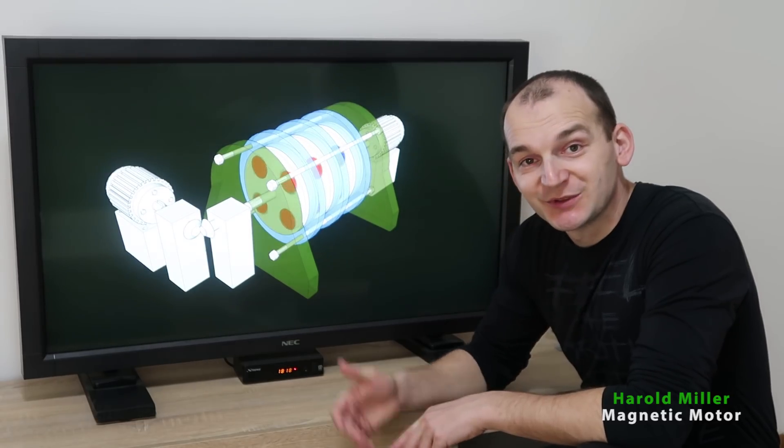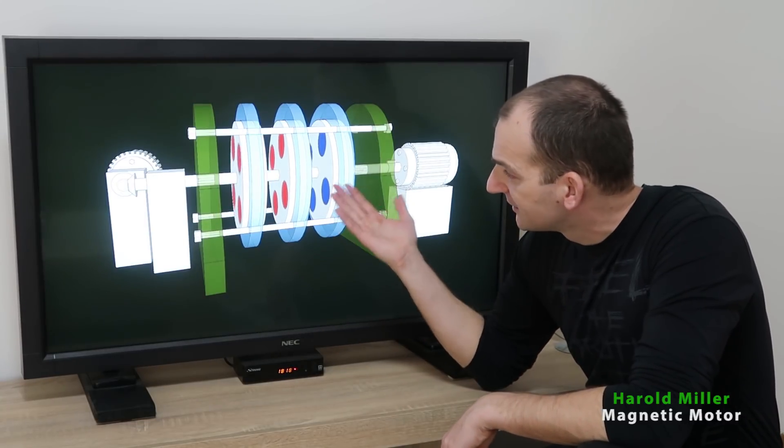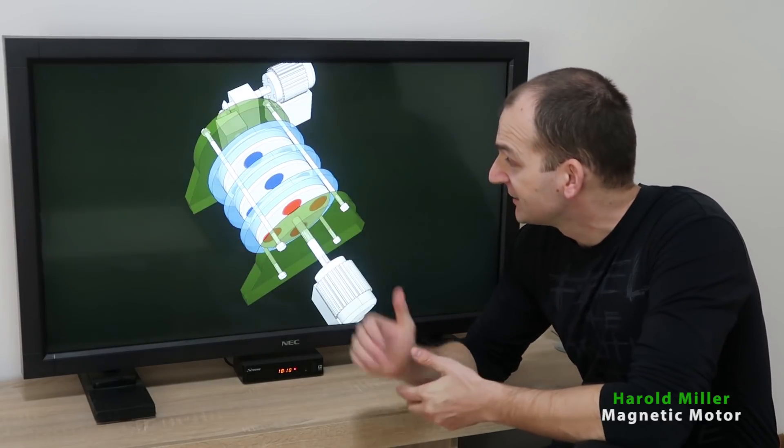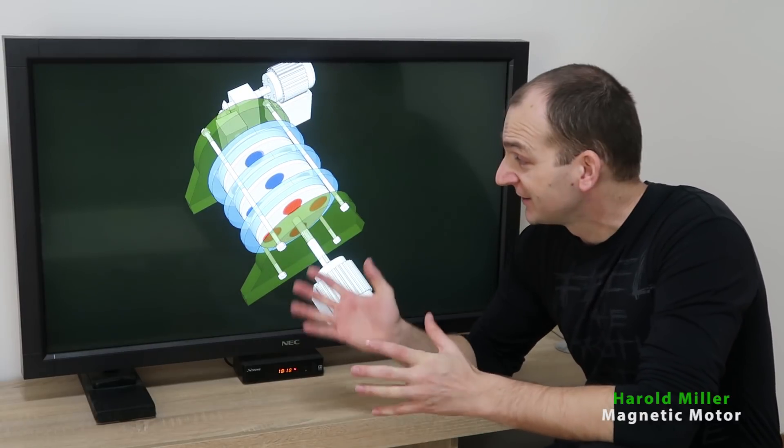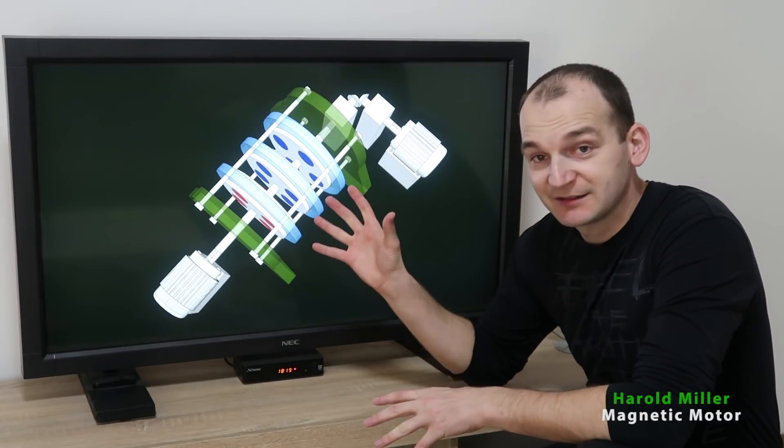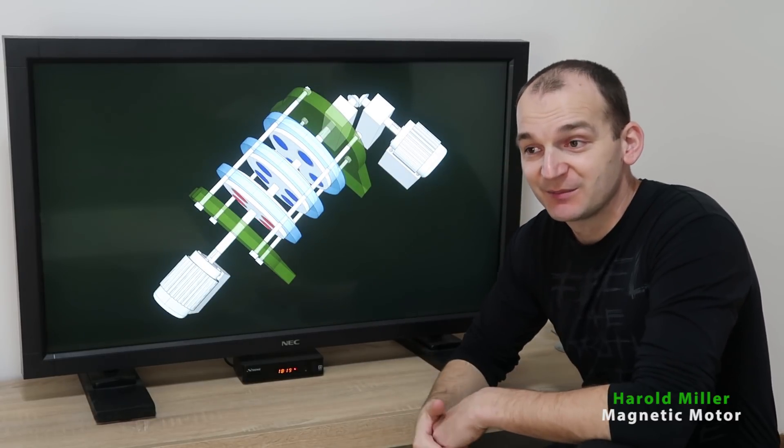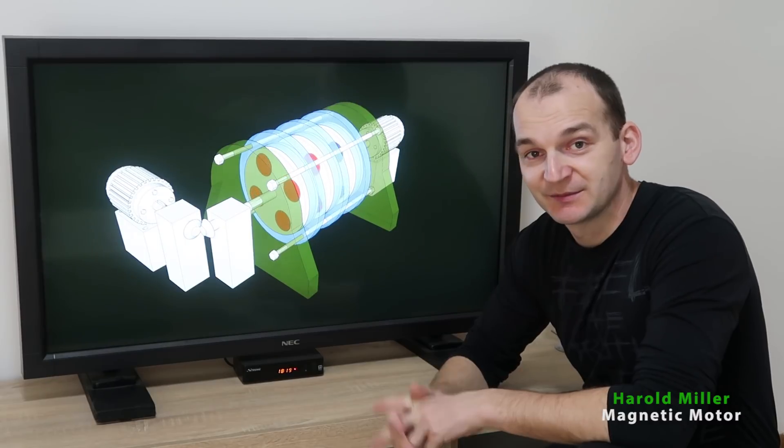So let's get on it. Alright, so this is the magnetic motor of Harold Miller. You can see that there are three rotors over here on the main shaft. As you can see they are not spinning equally because of how they're positioned. They should spin this way as it's shown because of how they're positioned on the main shaft.